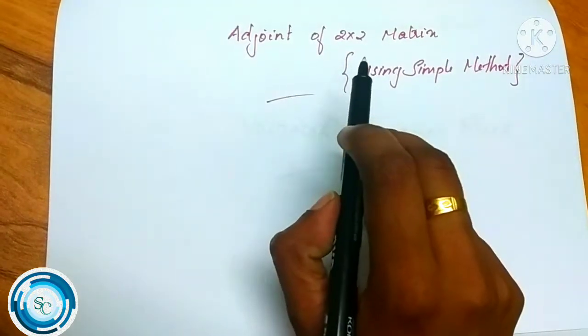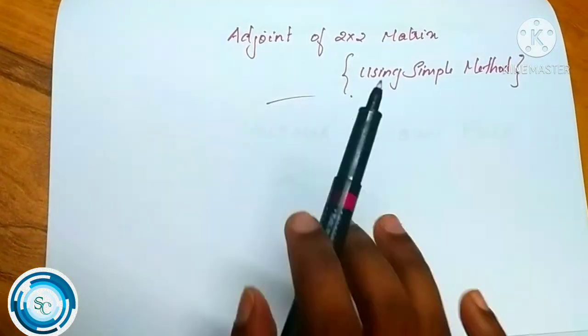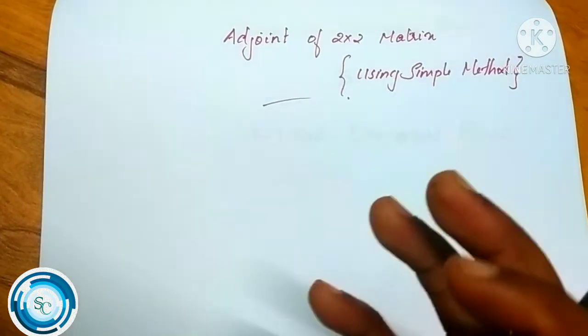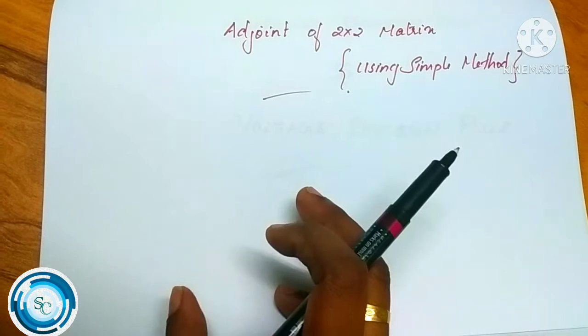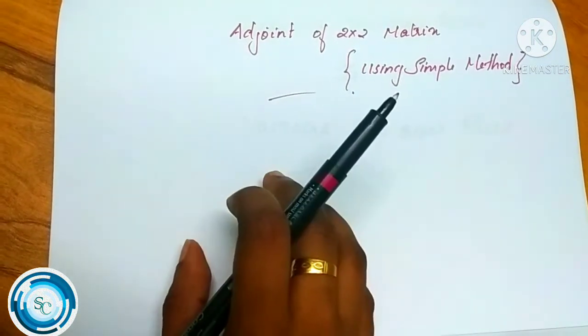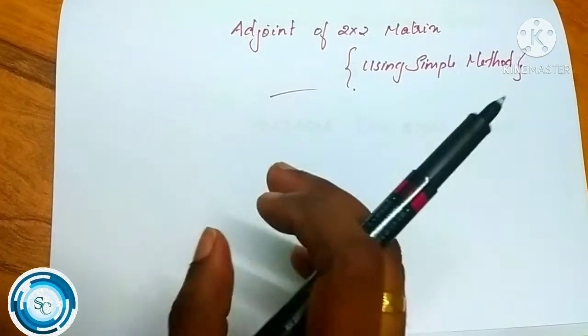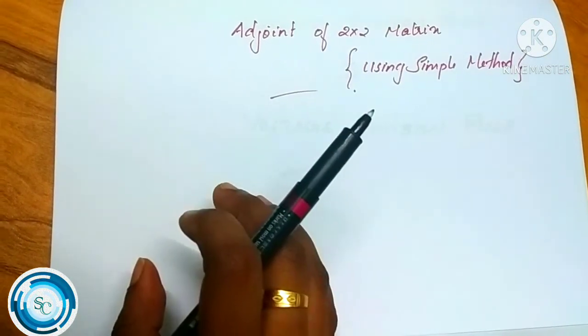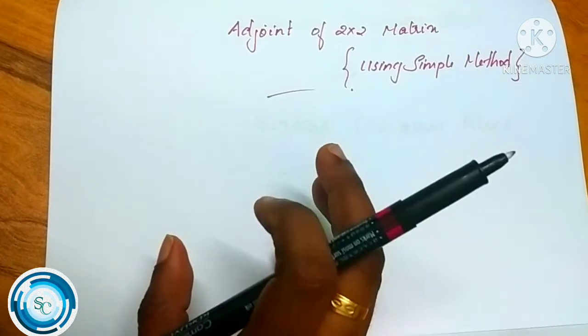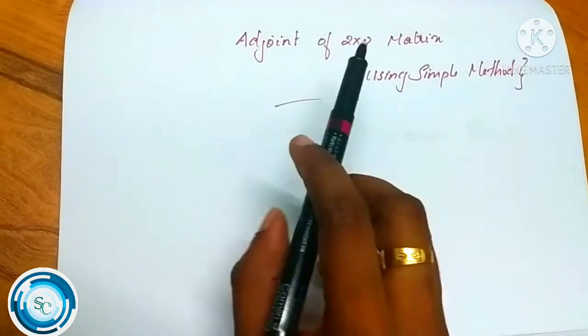Adjoint of a 2x2 matrix using symbol method. We have a 2x2 matrix and a 3x3 matrix, and we will learn how to calculate the adjoint of a 2x2 matrix using the symbol method.